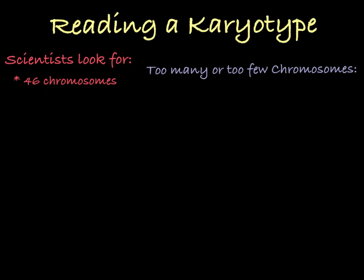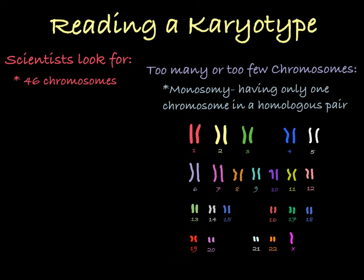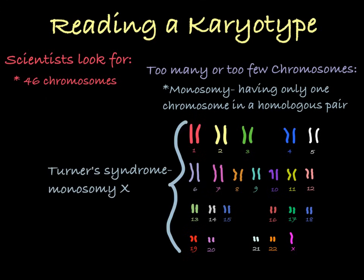For example, monosomy is a condition in which you only have one chromosome where you should have a homologous pair. In this karyotype, a person is affected with Turner Syndrome, which results from having only a single X chromosome instead of two chromosomes. We can see the second sex chromosome is missing. This person will suffer from a series of physical abnormalities, as well as infertility and challenges with mental development.